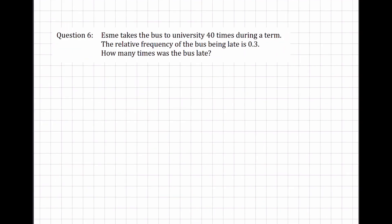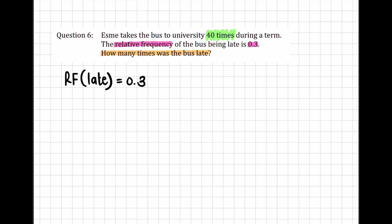Let's look at a question. Esme takes the bus to university 40 times — the bus happens 40 times during a term. The relative frequency of the bus being late is 0.3. The question is asking: how many times was the bus late? We have the relative frequency of the bus being late as 0.3, so that means 0.3 of the number of times is when the bus was late.